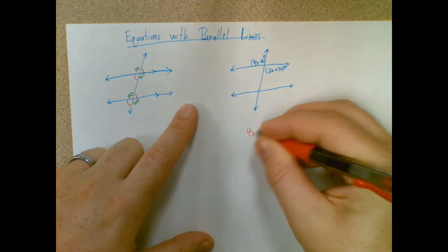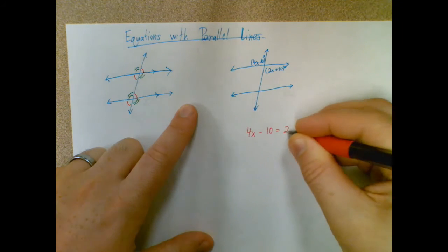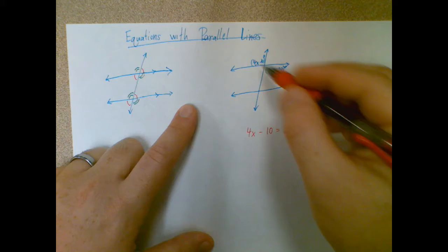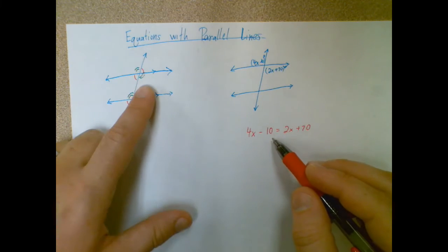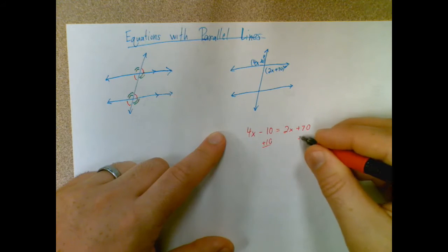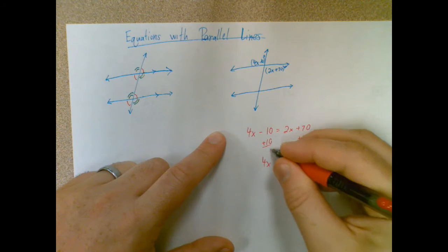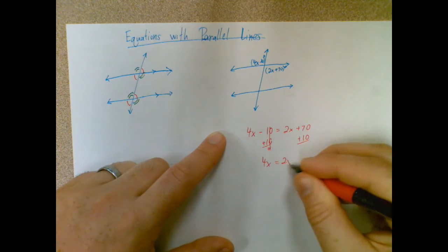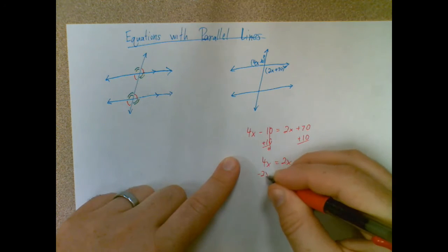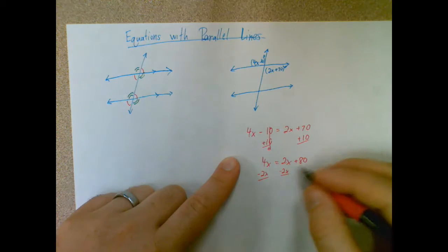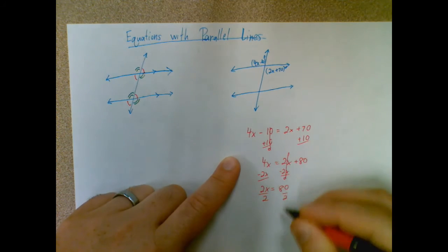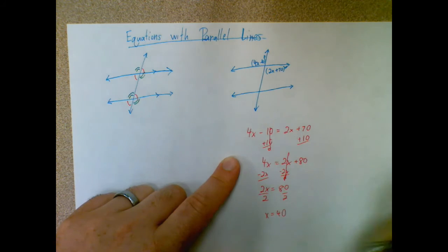So I am going to set those two expressions equal to each other. Since I know they're congruent, I can set them equal to each other and solve like normal. Let's do that. 2x equals 80, divide by 2, I get x equals 40.